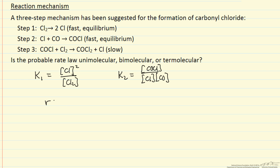And then the rate of the overall reaction is some rate constant times concentration, this intermediate concentration of chlorine. So we can solve for the concentration of this intermediate, the COCl intermediate.